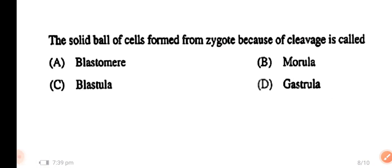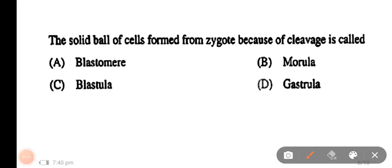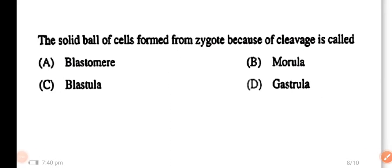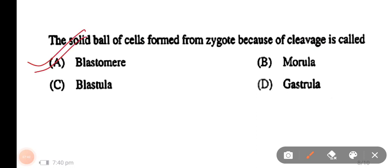Question number 8: the solid ball of cells formed from a zygote because of cleavage is called — the options are blastomere, morula, blastula, and gastrula. The right answer is option A: blastomere.